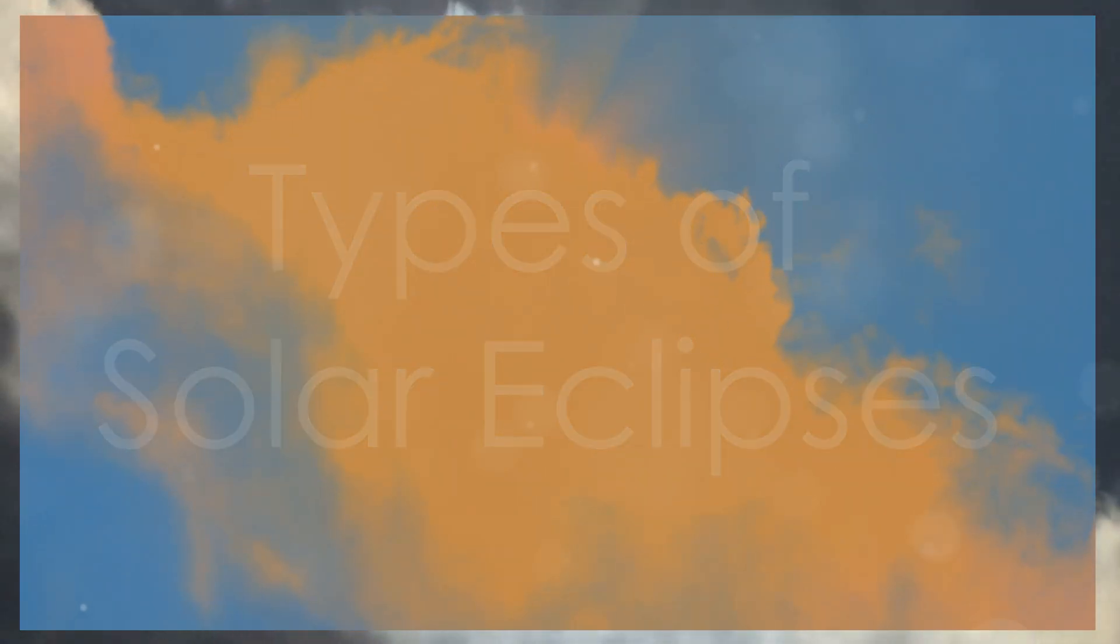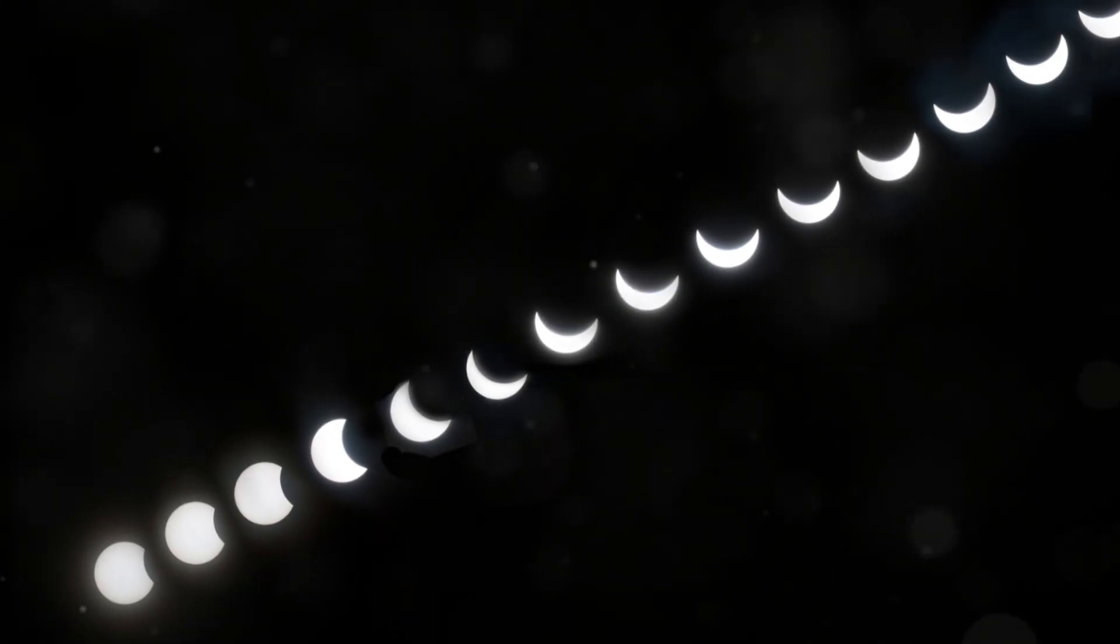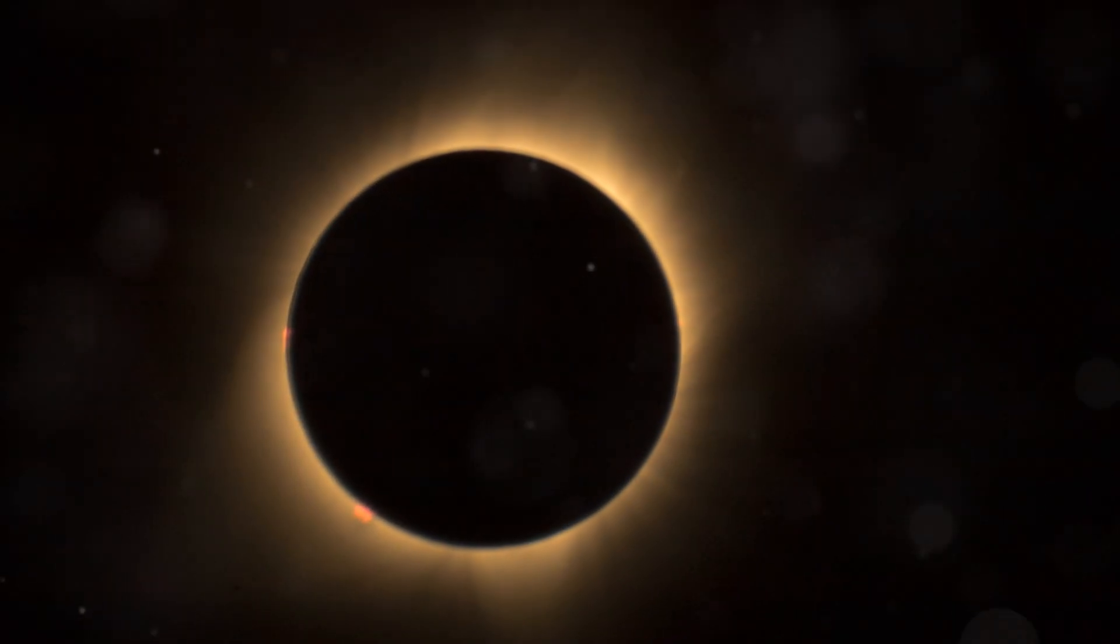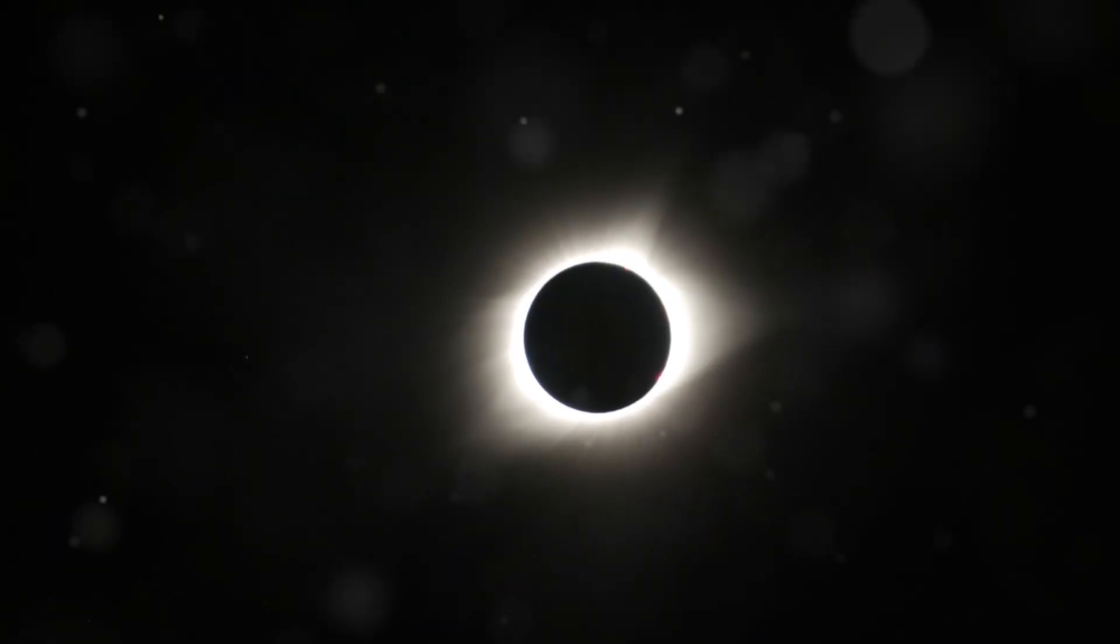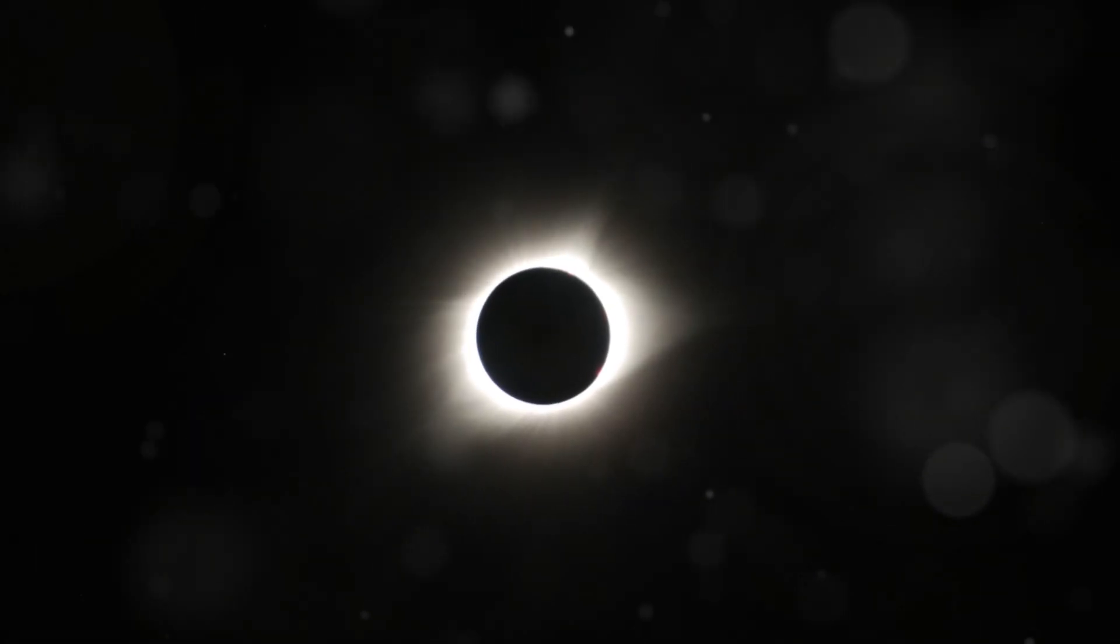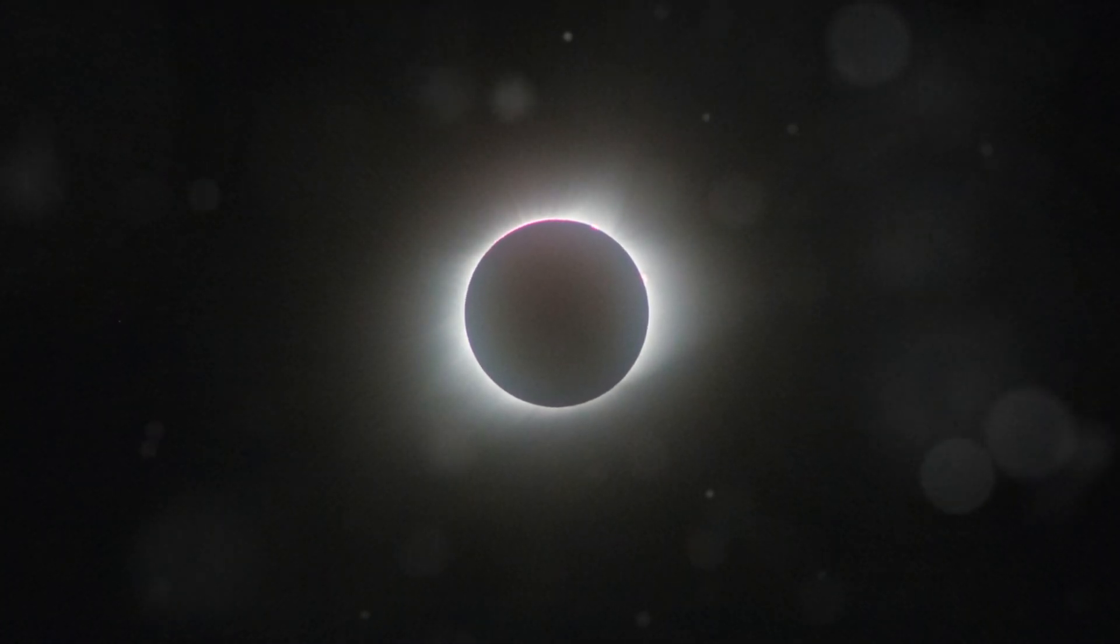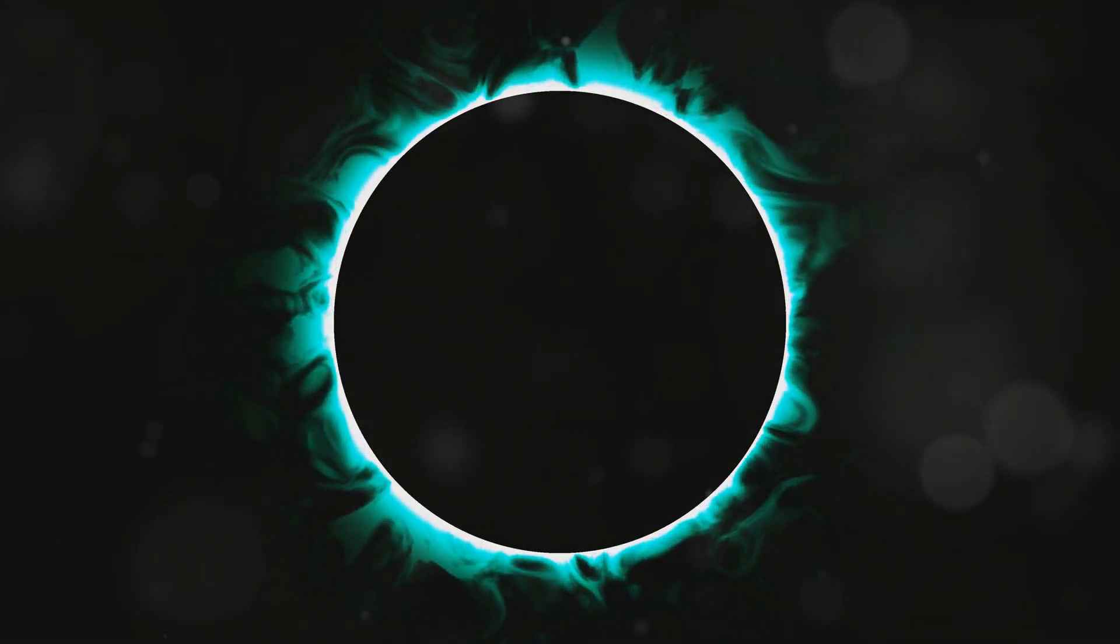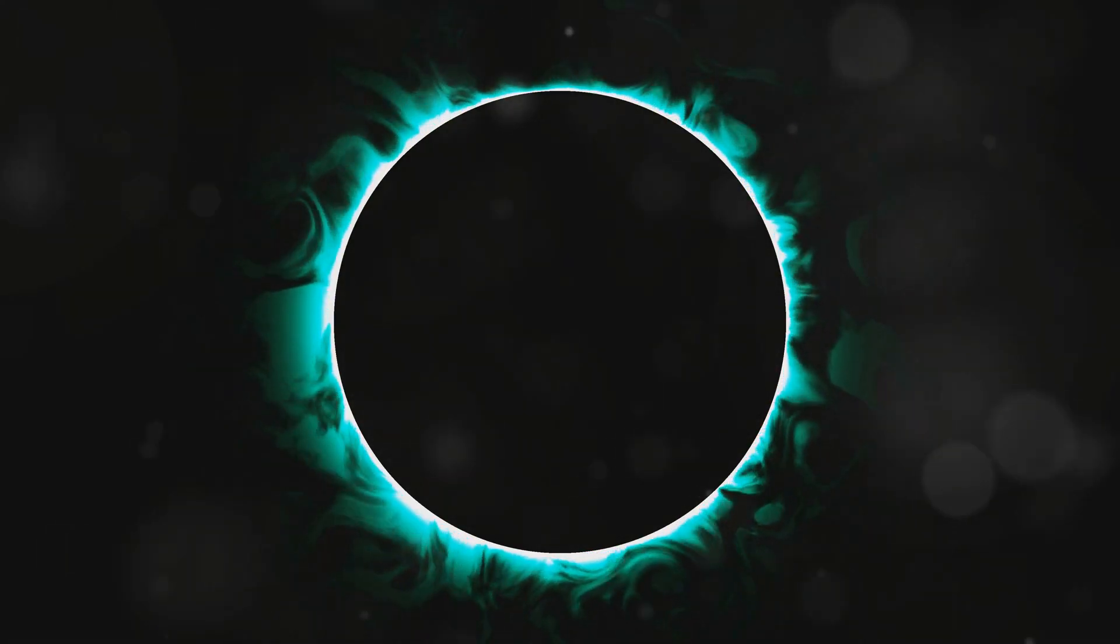Did you know that there are different types of solar eclipses? It's true! Each type offers a unique and breathtaking experience that captivates sky watchers around the world. Total solar eclipse: This is the most spectacular type. During a total solar eclipse, the moon completely covers the Sun. For a few minutes it gets dark as night in the middle of the day. The sky turns an eerie twilight and stars and planets become visible.